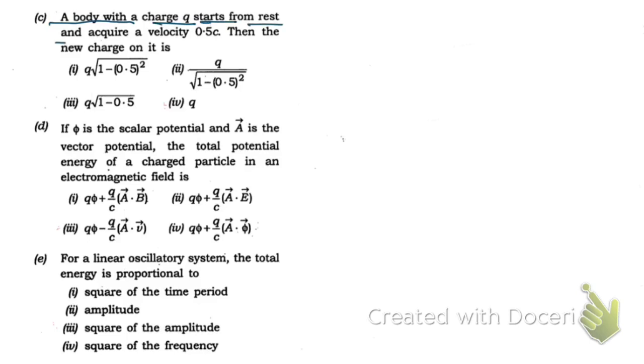Next: a body with charge q starts from rest and acquires a velocity 0.5c. What is the new charge on it? The charge of the body will remain the same; it doesn't depend on velocity. So it's gonna be q.